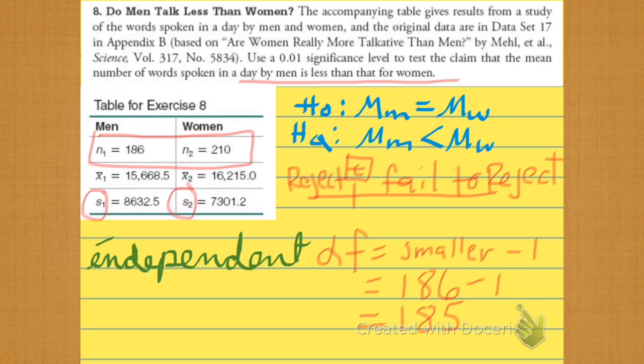So on our chart we go down to 185 degrees of freedom, and then they go to alpha equals 0.01. Or we could have used technology. Hey yo, I'm tired of using technology. And we see that it is going to be minus 2.37.